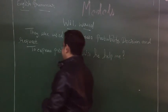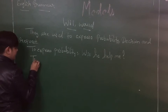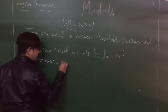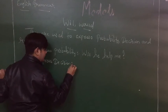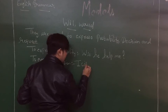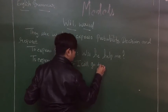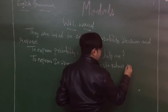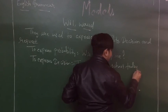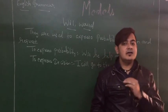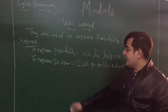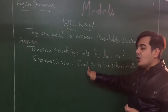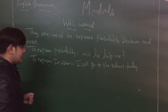Next, we have decision. To express a decision using will, we can say: 'I will go to the school today.' This means I have made a decision to go to school. So to express a decision, we use 'will' — as in 'I will go to school today.'